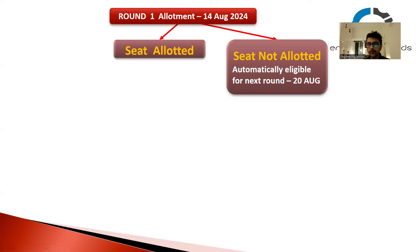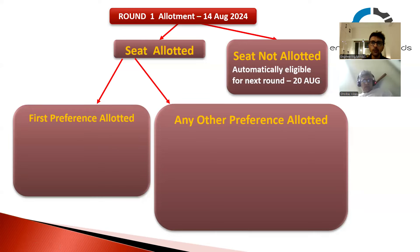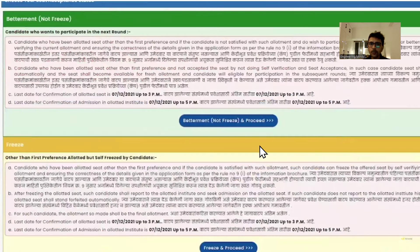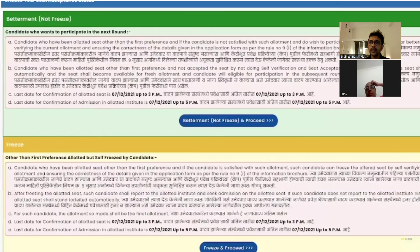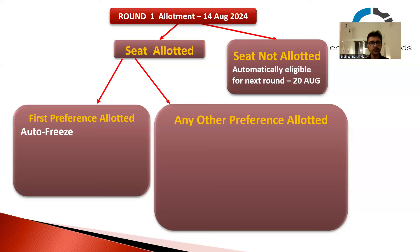If you have been allotted a seat, there are two things you can do. If you received your first preference, then it will be autofreeze - meaning there is no option to choose. It automatically becomes autofreeze. There is no freeze or don't freeze option available. Since it is your first preference, there is nothing better for you, so the system autofreezes it.